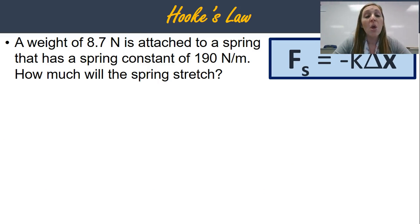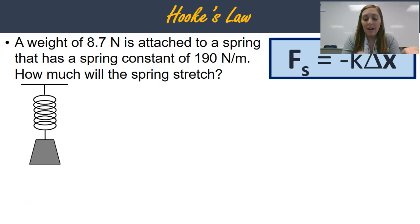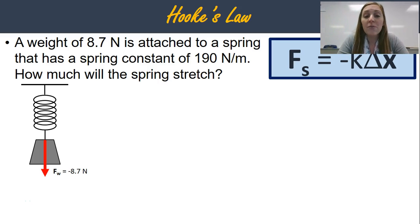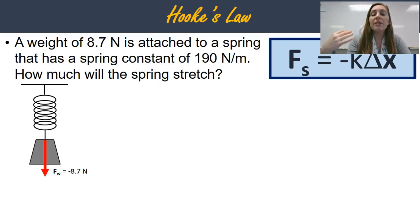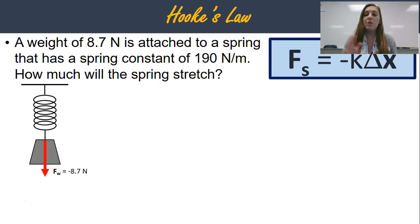Here's a practice problem. We have a weight of 8.7 newtons attached to a spring that has a spring constant of 190 newtons per meter. How much will the spring stretch? The very first thing you want to do is draw a picture. I've got a spring hanging because I have a weight attached to it. The weight of that object is 8.7 newtons, and since it's in the down direction, the force of the weight is negative 8.7 newtons. The spring has a constant of 190 newtons per meter, which means it requires 190 newtons to stretch it one meter. This is nowhere near 190 newtons, so we know the answer shouldn't be anywhere near a meter. All physical problems should make mathematical sense at the end.